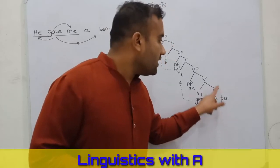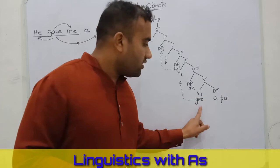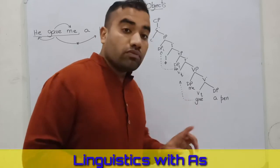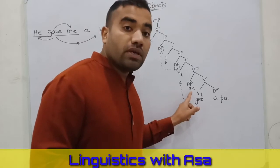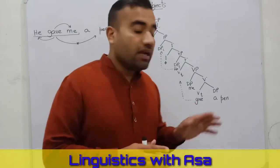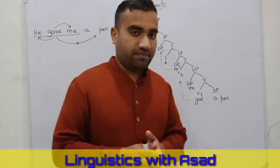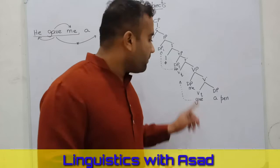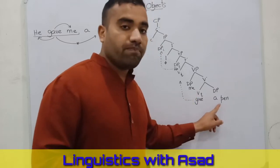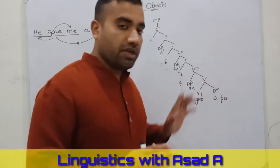The verb 'give' takes a DP as a complement and projects the VP level — this is our thematic structure. 'Give' assigns 'pen' a theta role and assigns 'me' a theta role. Note that at the thematic structure level, Case cannot be valued; Case can only be valued at the functional level. At this level we have the DP 'I', and these two DPs have been assigned Case within the local domain.